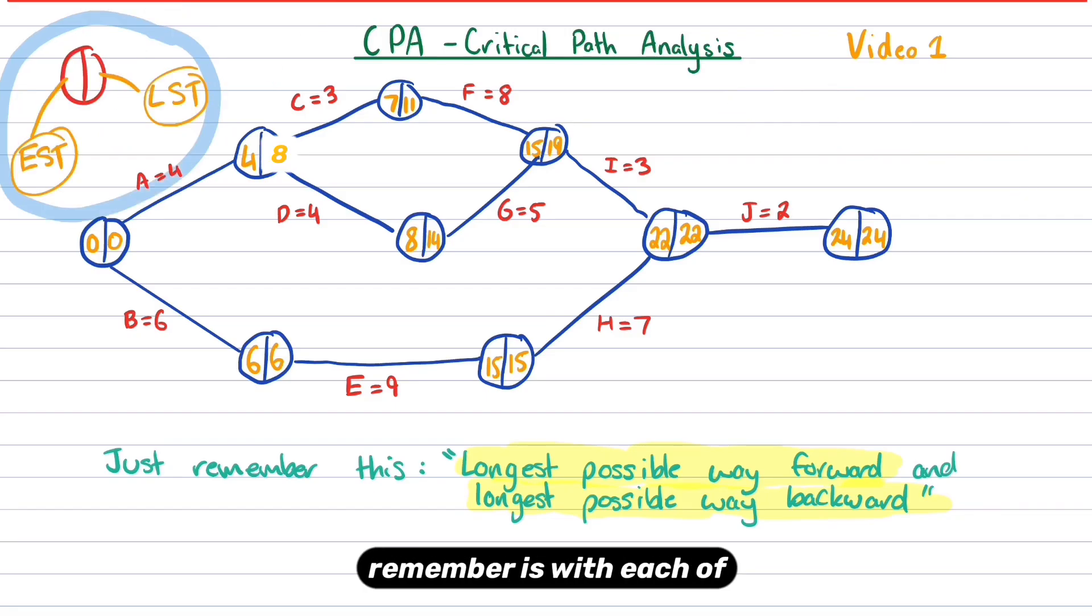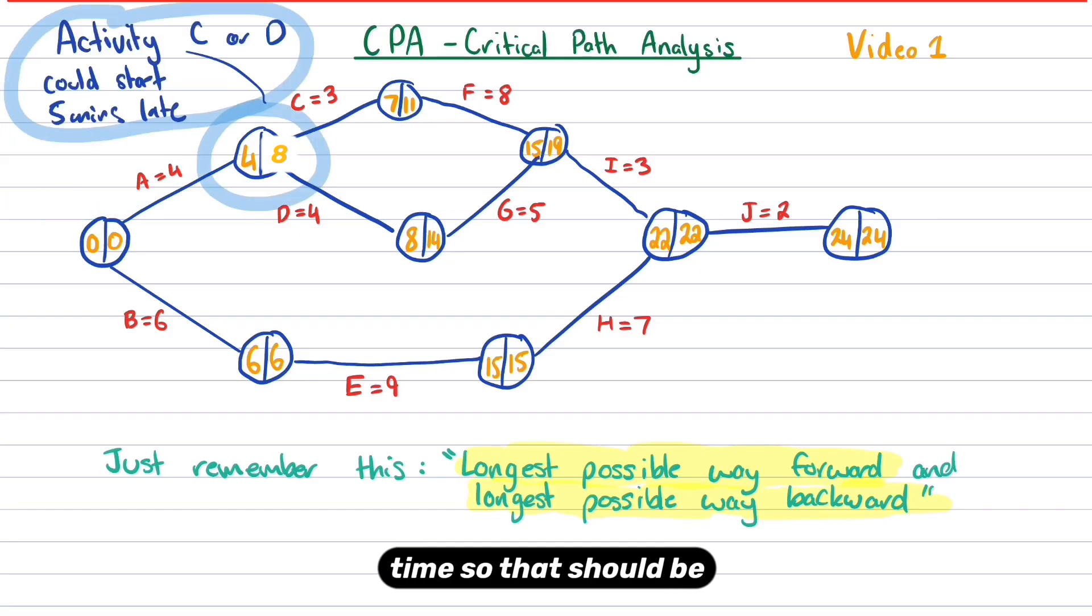So something important to remember is with each of these nodes, what these represent on the left, it's the earliest start time. And on the right, it's the latest start time. So that should be four and eight, right? So what that means is that for activity C or activity D, they could technically start four minutes late, not five minutes. That's a typo. They could start four minutes late and it wouldn't really interrupt anything. So if they rocked up and they completed the task three minutes late or four minutes late, that's okay because it's not going to interrupt the whole activity.